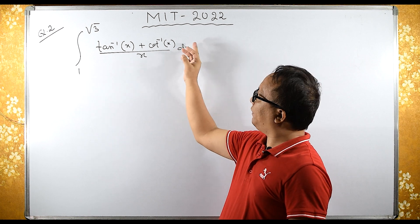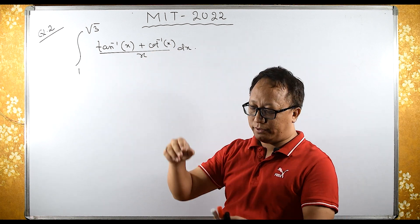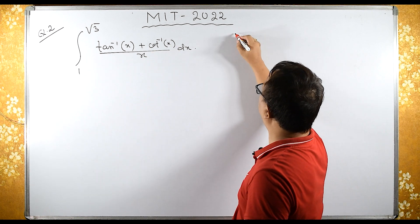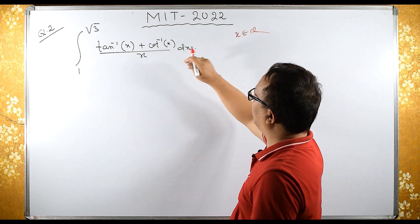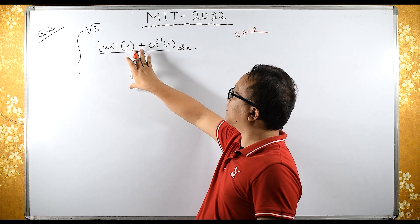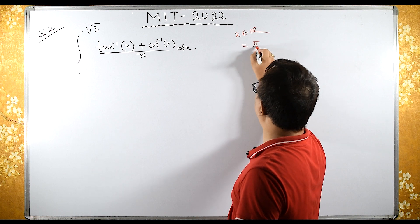If x belongs to real numbers, we can use the identity tan inverse x plus cot inverse x equals pi by 2.